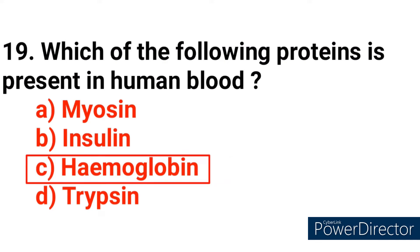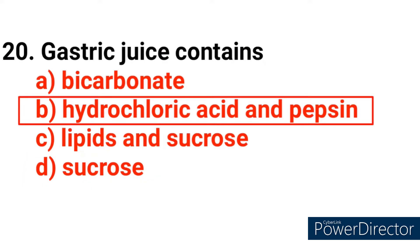Question number 19: Which of the following proteins is present in human blood? Answer option C — hemoglobin. Next question: Gastric juice contains? Answer option B — hydrochloric acid and pepsin.